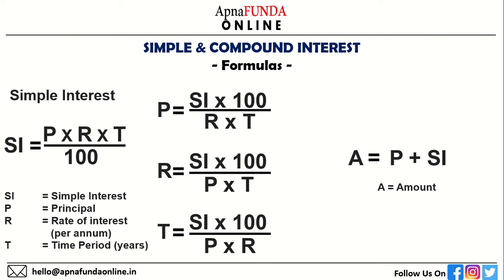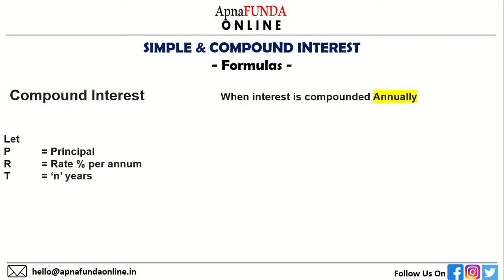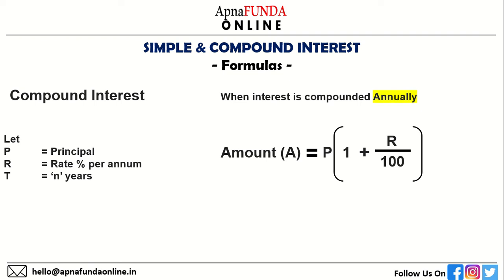Now let's move to compound interest. Let P be the principal, R be the rate percent per annum, and T equal to N years. When interest is compounded annually, amount A is equal to P into 1 plus R by 100 whole to the power N.